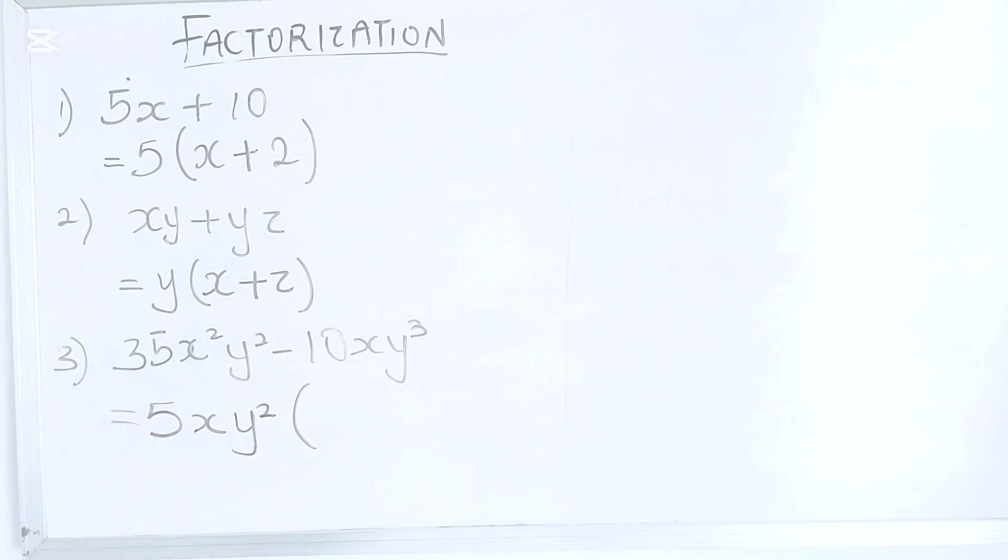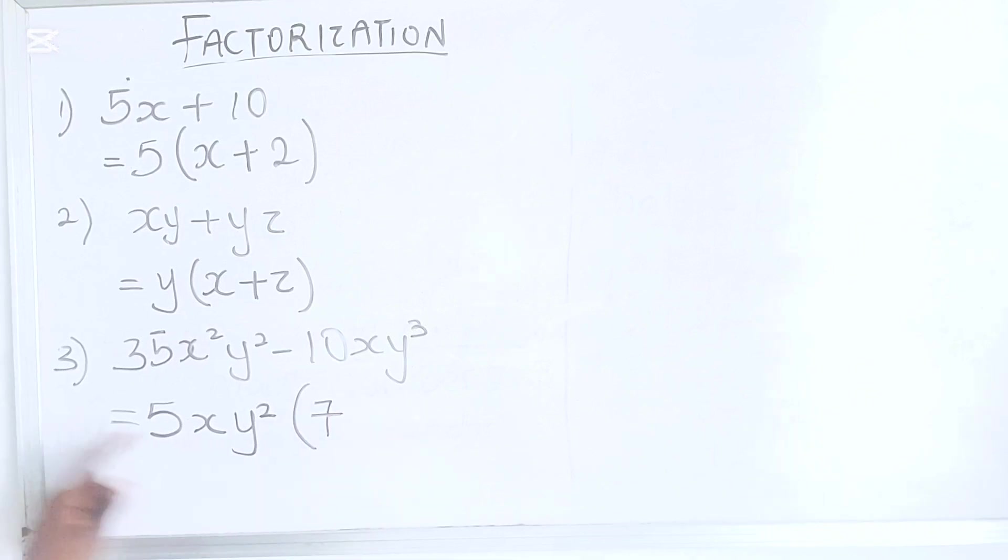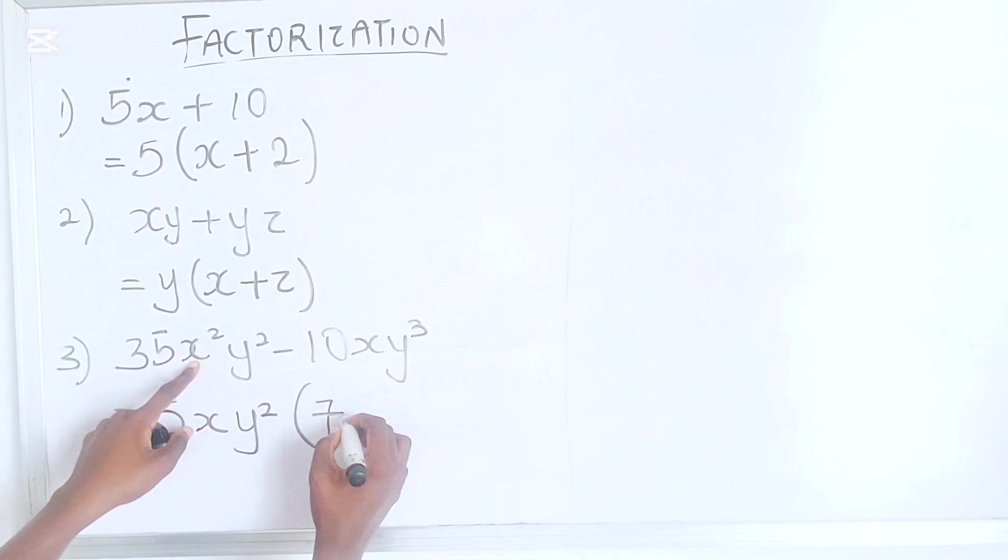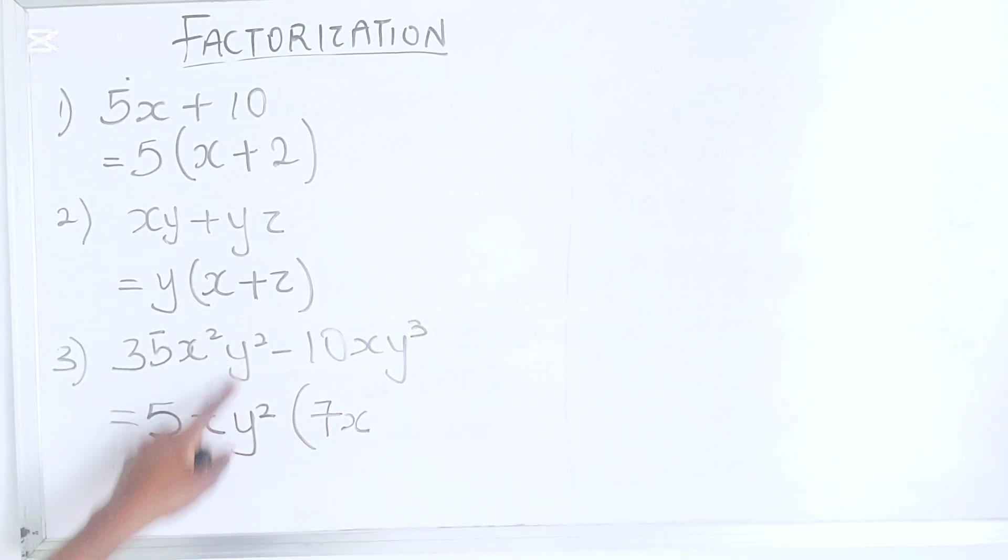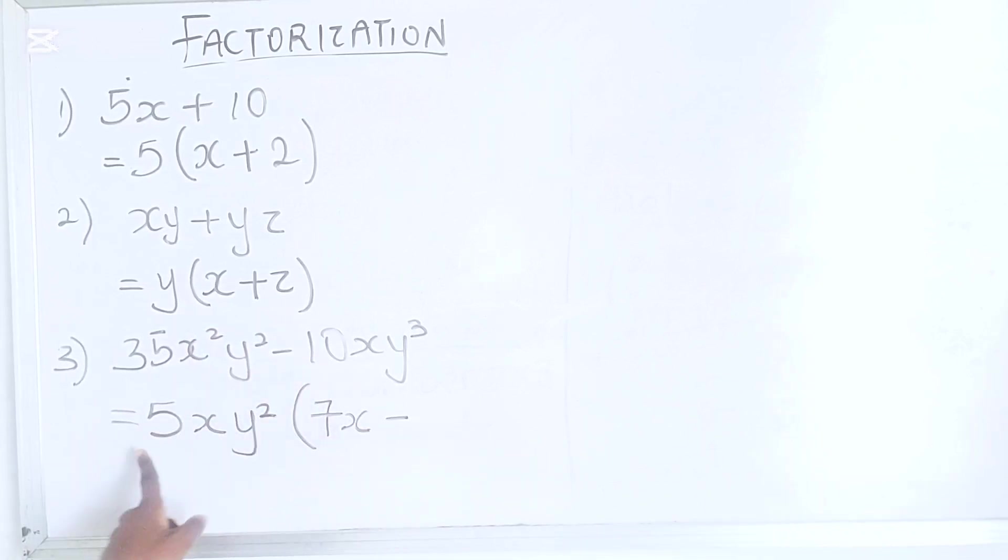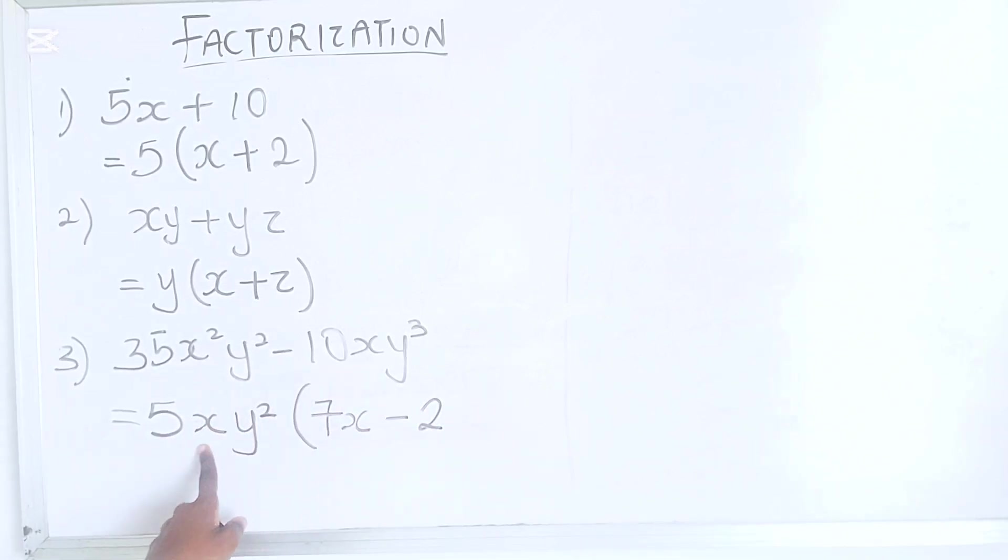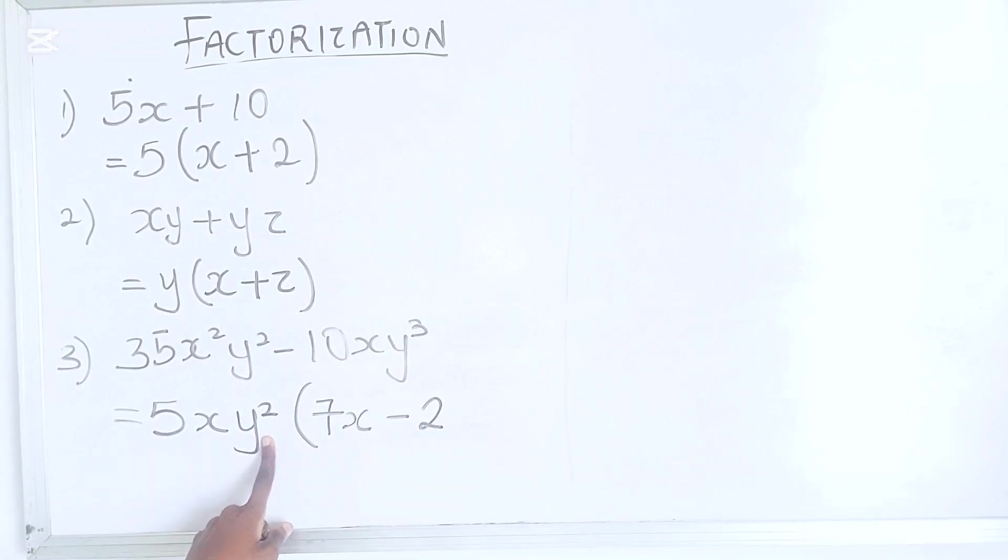So now when you divide, 35 divided by 5 is 7. So X in X squared, you'll be left with 1X. Y squared 1, Y squared is gone. This is the same as doing division. Moving on to the next one. 10 divided by 5 is 2. X cancels X. That's gone. Y cubed divided by Y squared is, you're left with just 1Y.